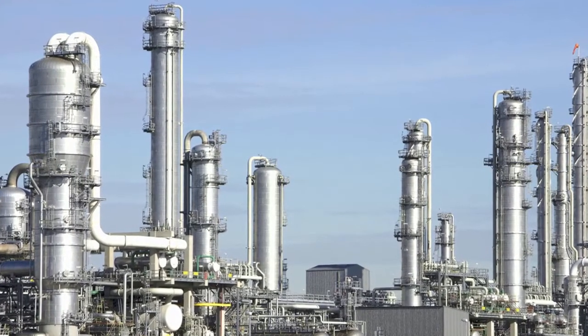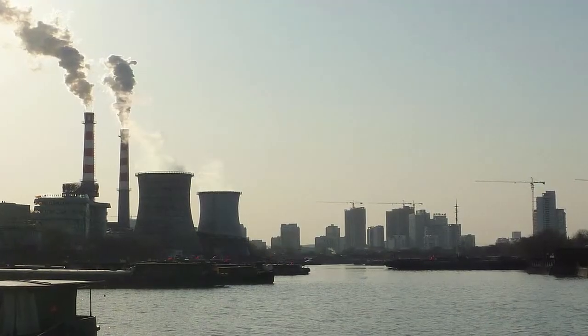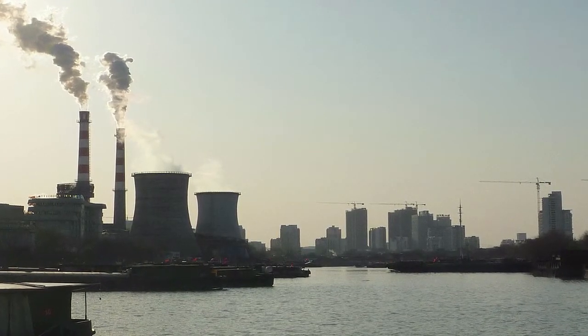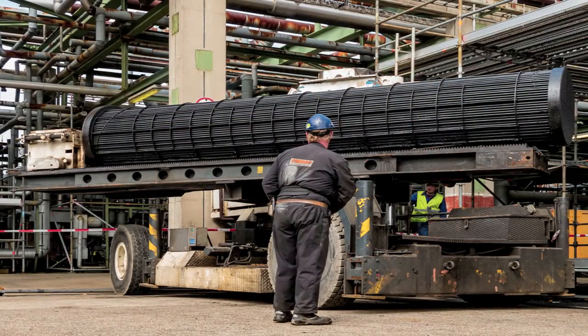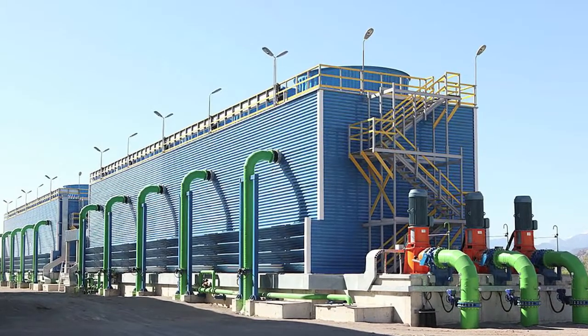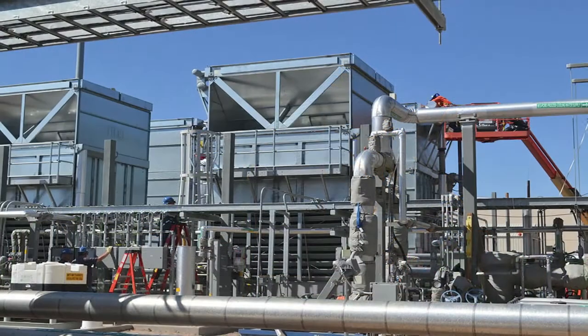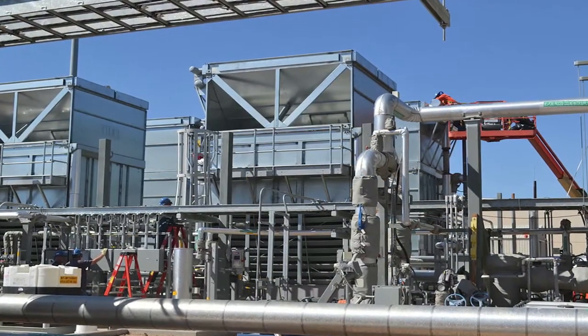In many industrial plants, low-priced river or seawater is used for process cooling, which naturally shows a high degree of contamination. In this case, heat exchangers and the entire cooling system need to be protected from pollutants continuously without interrupting the flow.